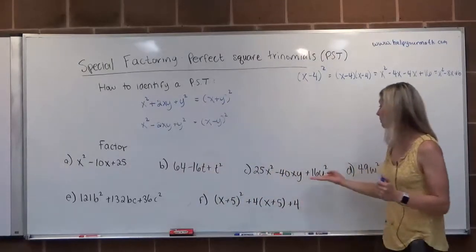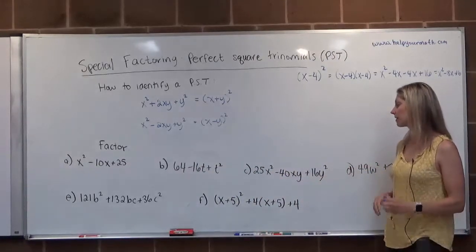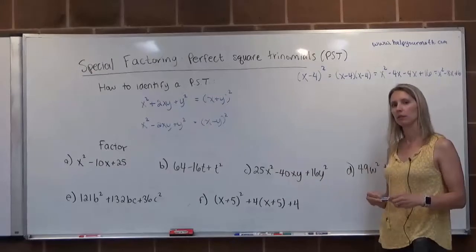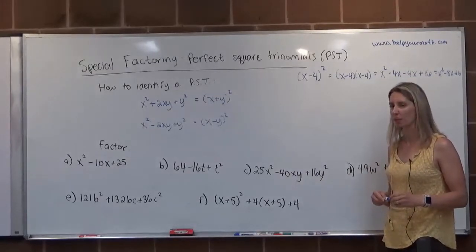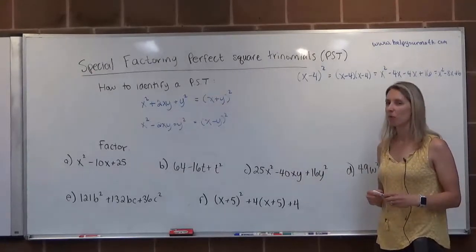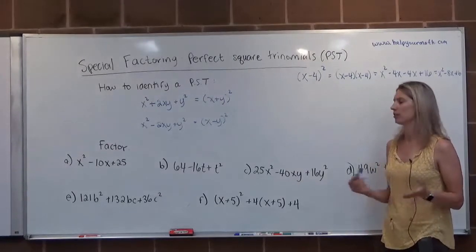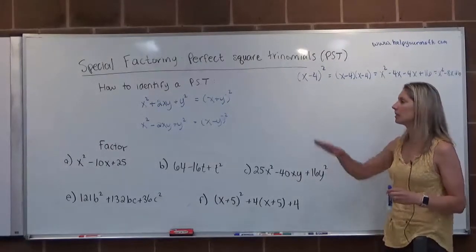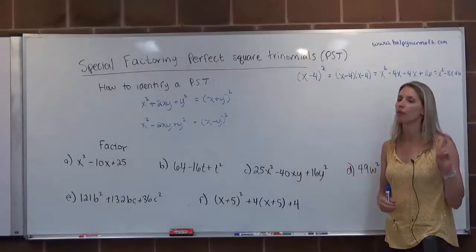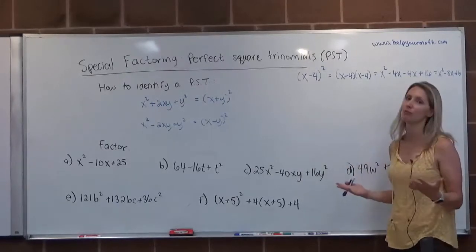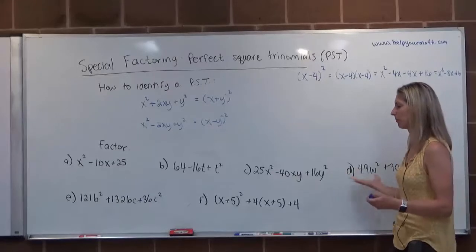It will get bad when we see something like this: 25x squared minus 40xy plus 16y squared. If you try to do your target product, you're talking about 400, 25 times 16. You don't want to sit there and list factors of 400. That's terrible. So instead, just see if it's a perfect square.